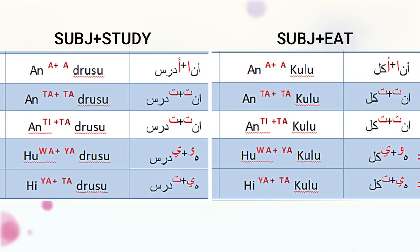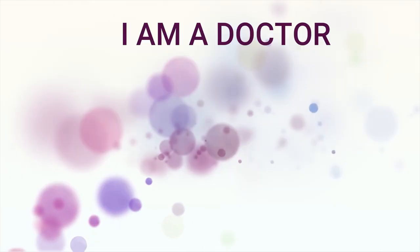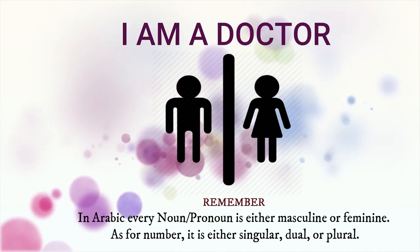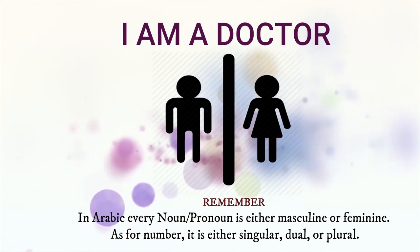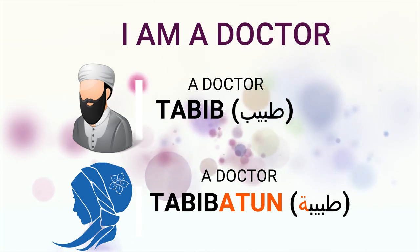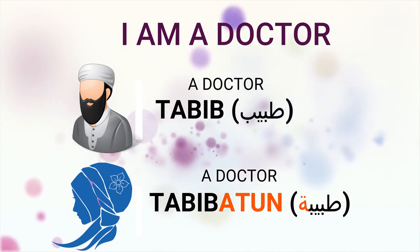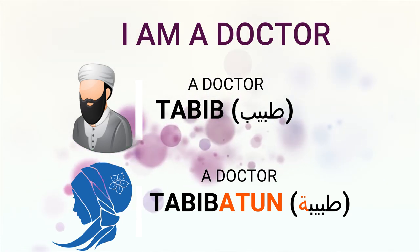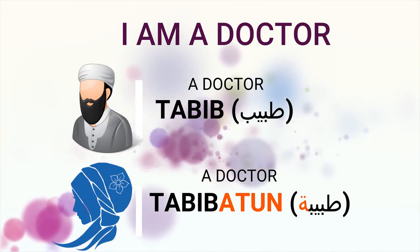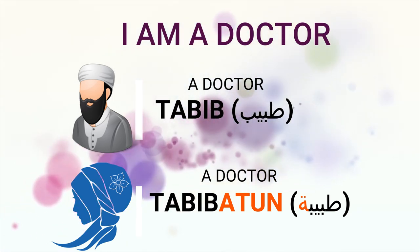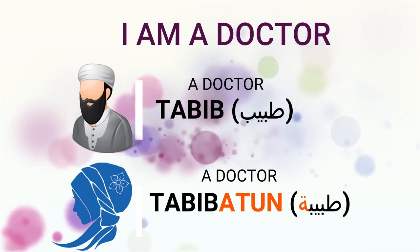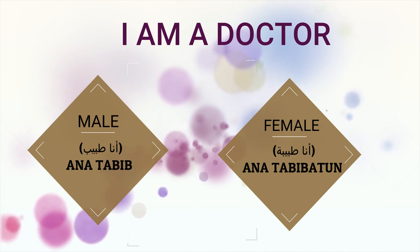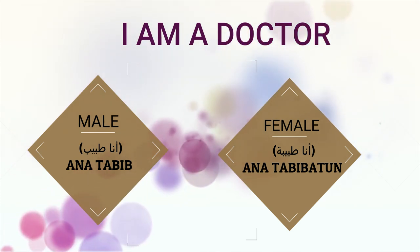Again, have a look in different sentences. The structure is the same — only the change is in the root word. You will fall in love with Arabic because of its smart design. Remember, in Arabic every noun or pronoun is either masculine or feminine. For example: I am a doctor — if the doctor is male, in Arabic it's tabib. Repeat: a doctor — tabib. And if female, it's tabibatun. Repeat: tabibatun — a doctor. So: ana tabib for male, and ana tabibatun for female.